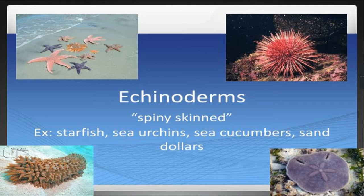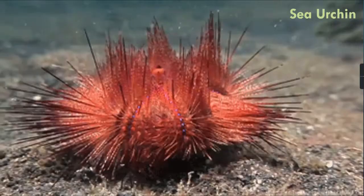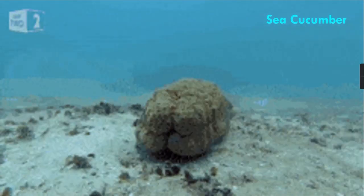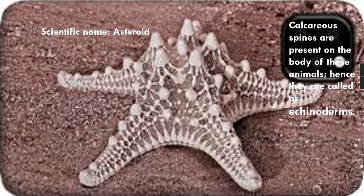So the meaning of Echinodermata is 'spiny skin animal' — an organism which has a spiny skin. Examples of echinoderms are starfish, sea urchins, sea cucumbers, and sand dollars. The scientific name of starfish is Asteroid.